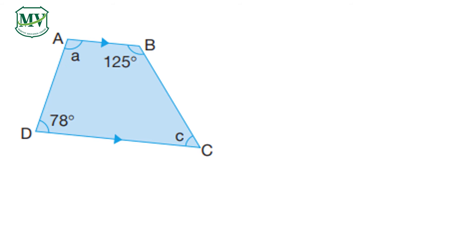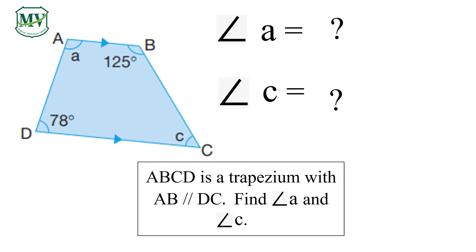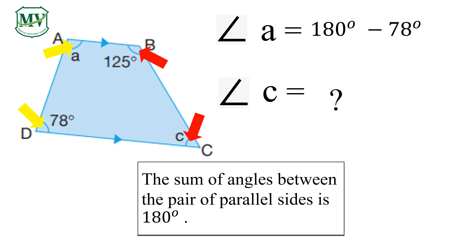The next figure is a trapezium. ABCD is a trapezium with AB parallel to DC. Find angle A and angle C. The sum of angles between the pair of parallel sides is 180 degrees. Look at the picture. Let's solve angle A first: 180 degrees minus 78 degrees is equal to 102 degrees.